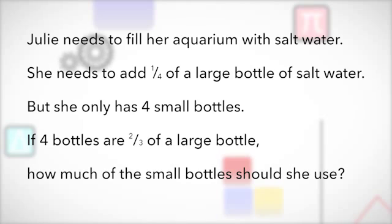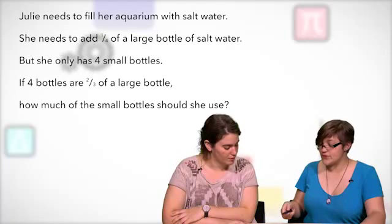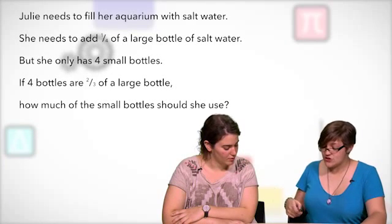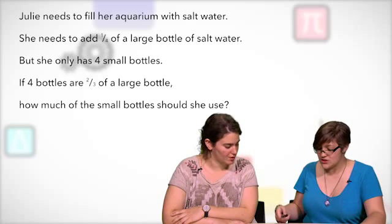Julie needs to fill her aquarium with salt water. She needs to add one quarter of a large bottle of salt water, but she only has four small bottles. If four bottles are two thirds of a large bottle, how much of the small bottles should she use? Why doesn't she just get a large bottle and just one fourth? I don't get these math problems. Anyway, we should probably try to draw it out. Yeah, visually seems to work well. Yeah, it's been working so far.